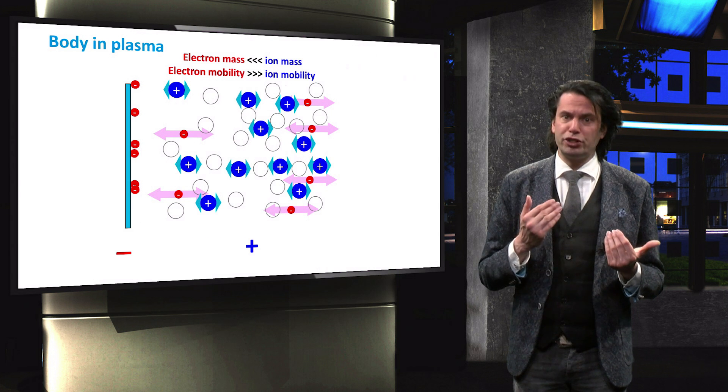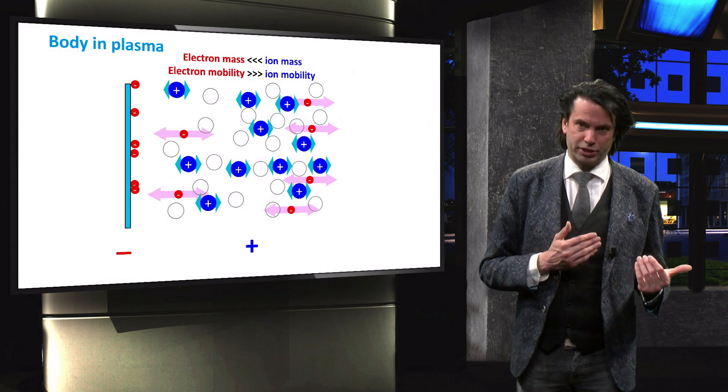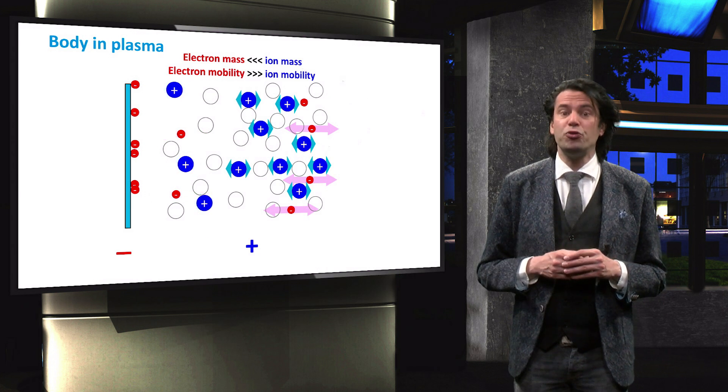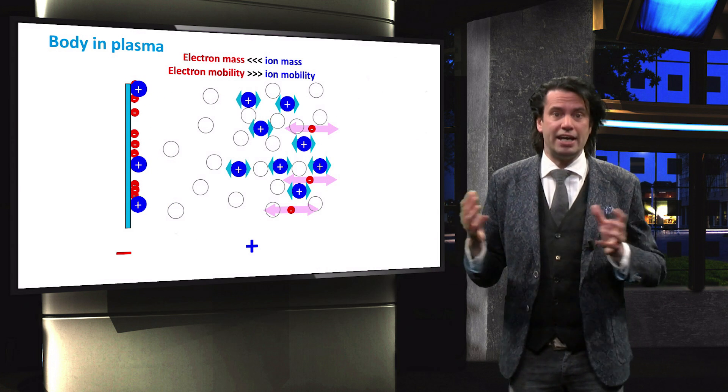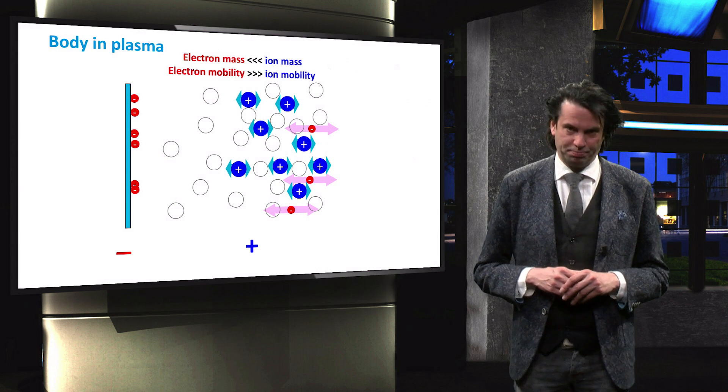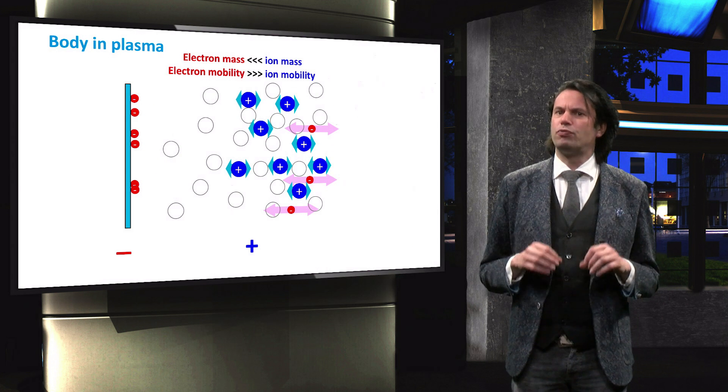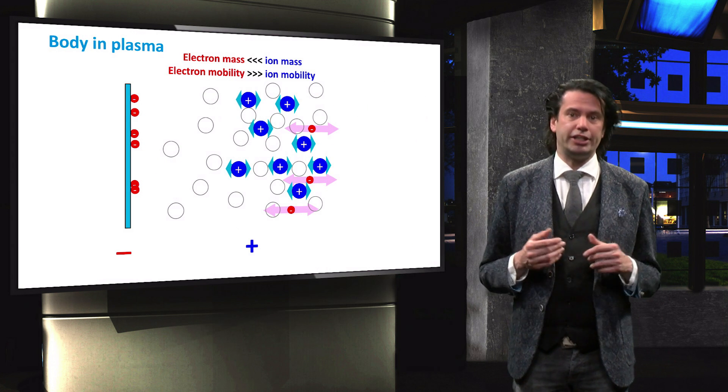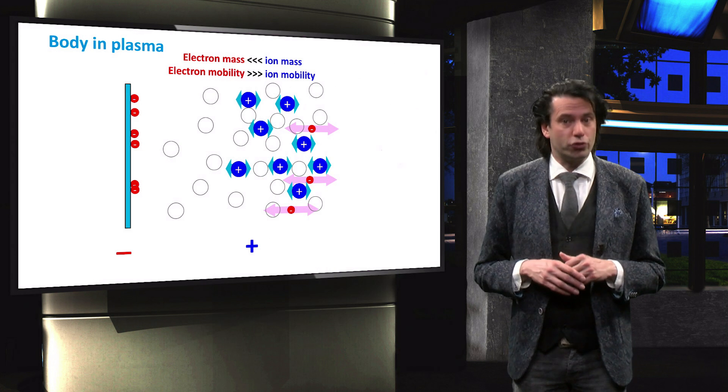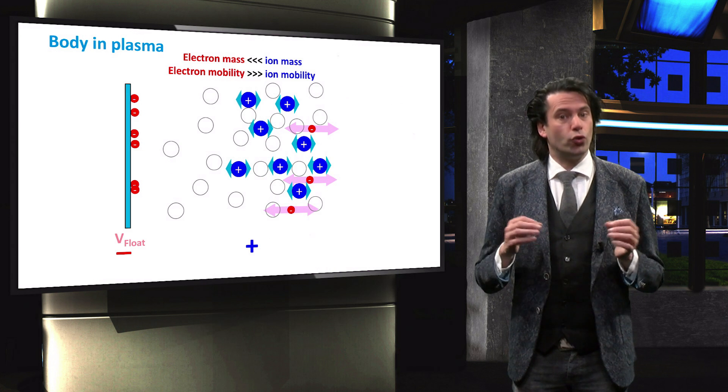The negative voltage will continue to increase, until equal number of ions and electrons hit the surface of the object. The voltage at which the ion current equals the electron current is called the floating potential, or floating voltage.